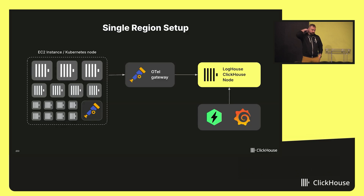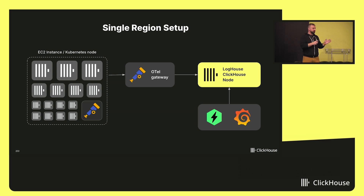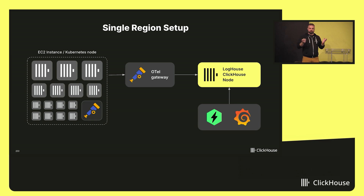The OpenTelemetry pipeline is pretty classic. We have Kubernetes applications running on nodes. Each node runs an OpenTelemetry collector agent that tails the console logs of applications running on that node. Those are sent to a centralized region-wide OpenTelemetry collector gateway, which handles all telemetry enrichment and post-processing. Finally, it batches the data and inserts it directly into the regional LogHouse server. Once it's in ClickHouse, we use tools like Grafana, HyperDX, or even direct access to the ClickHouse instance to get access to this data.